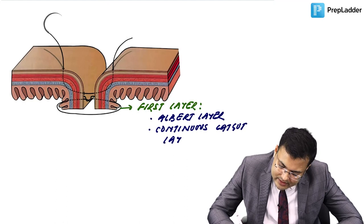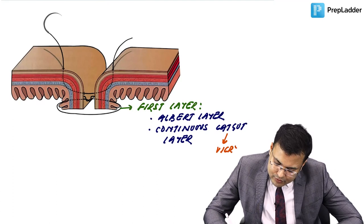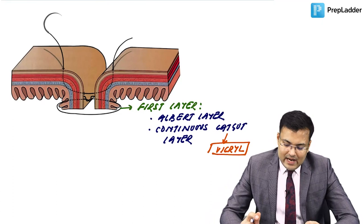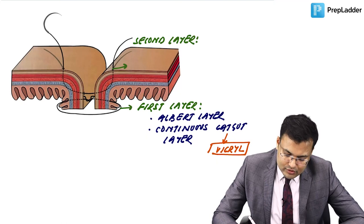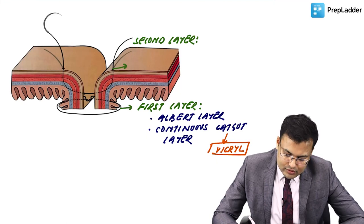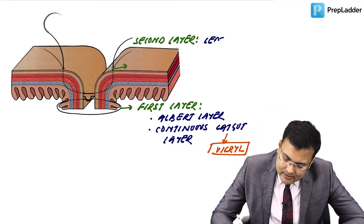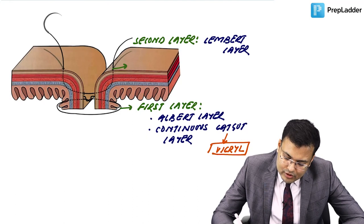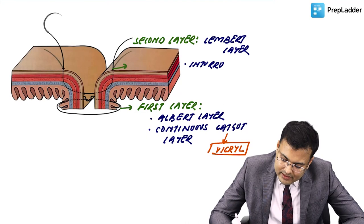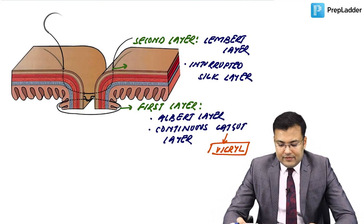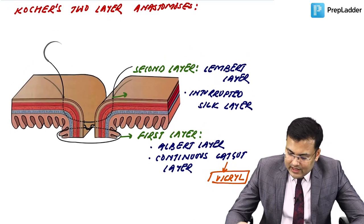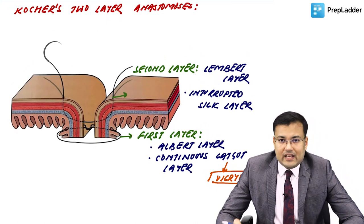The third type is stapled anastomosis, using either a linear stapler or a circular stapler. The linear stapler is inserted with one limb in each bowel end and fired to create a side-to-side anastomosis. The remaining open ends are then closed with a transverse stapler.